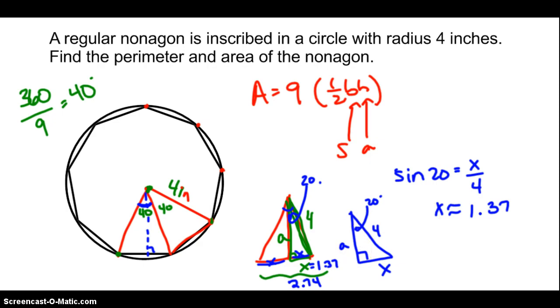The next thing we have to do is find the length of our apothem. So here's our apothem. And we already know the 4 is the hypotenuse, so I'm going to use the cosine. Cosine of 20 equals A over 4. So we're going to do 4 times the cosine of 20. That gets us 3.76. And that's the height of these triangles, 3.76.